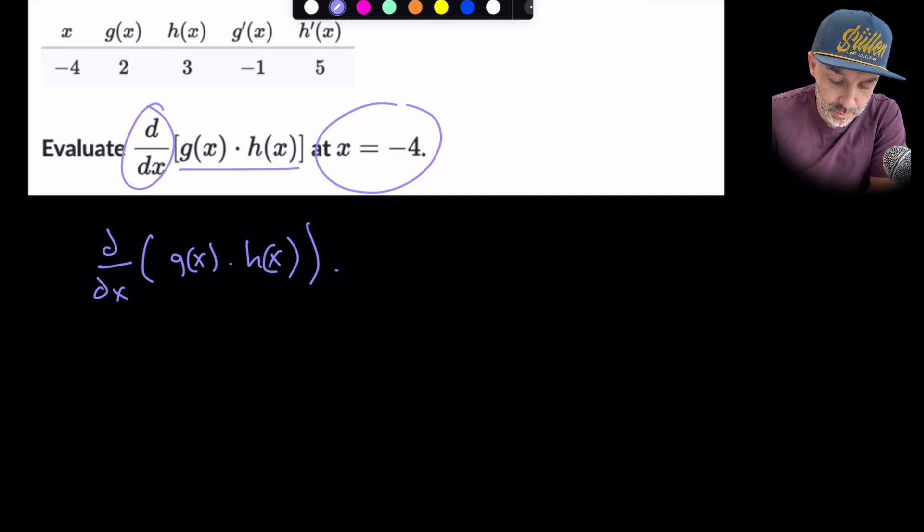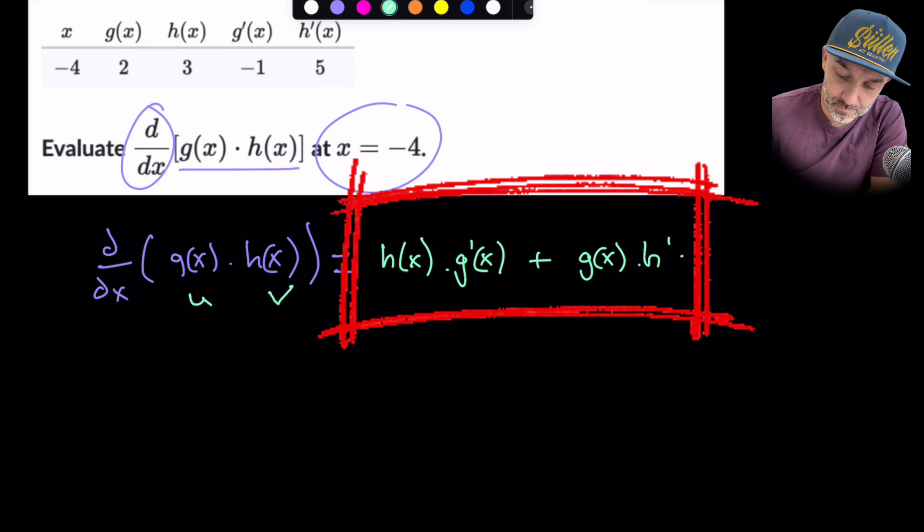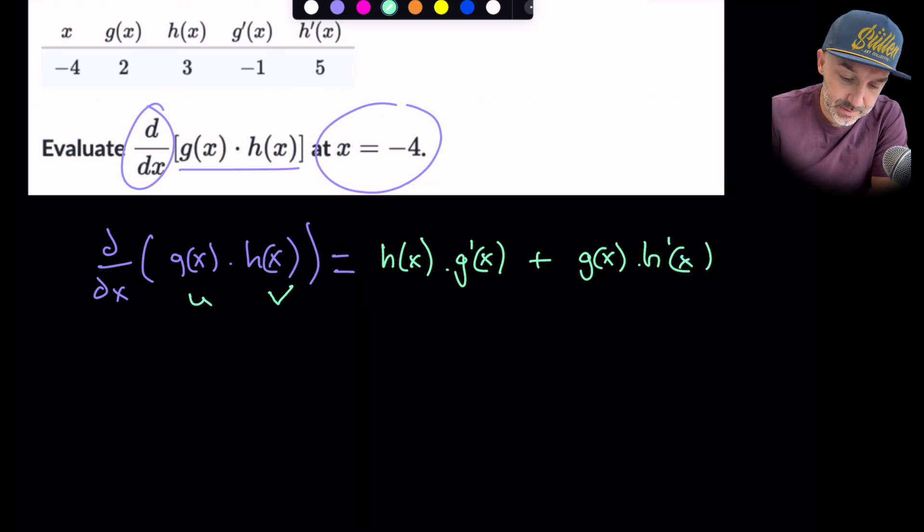So product rule states then that if we were to differentiate d by dx of g of x, h of x, then the product rule states that it's v du plus u dv. So if this was u and this was v, then it would be v times the derivative of u plus u times the derivative of v. And it just simply tells us at minus 4 where we need to plug in.